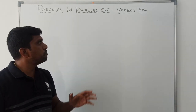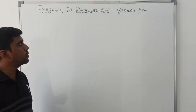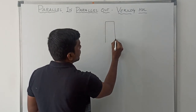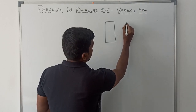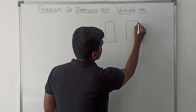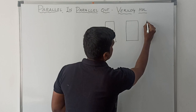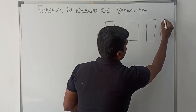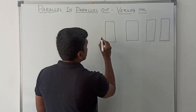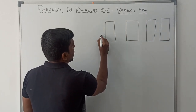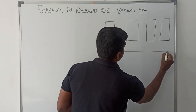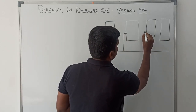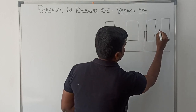First, I will draw the block diagram for parallel-in-parallel-out shift register. Here I am taking a 4-bit shift register, so I need 4 flip-flops. I am applying a common clock pulse for all 4 flip-flops.